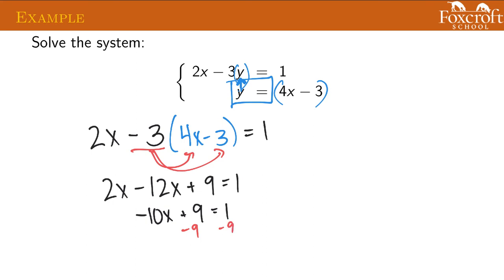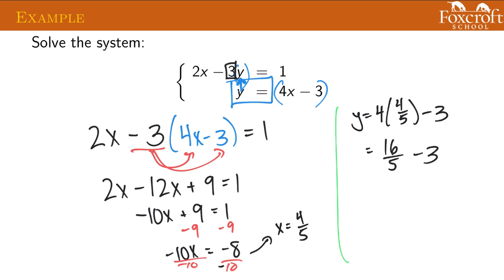So especially when you are doing this substitution method, really be careful with the distributive property. This number in front of the things you're substituting in affects the entire thing that you plugged in. So let's just finish this. And that means that x is going to be negative 8 over negative 10, which is 4 over 5. And then we can plug that into our other equation. Now we know x has to be 4 over 5. 16 over 5 minus 3. And this one's not going to come out as nice. We have to get a common denominator. So 3, if I multiply that by 5, it's going to be 15 over 5. And that's going to give me 1 fifth.